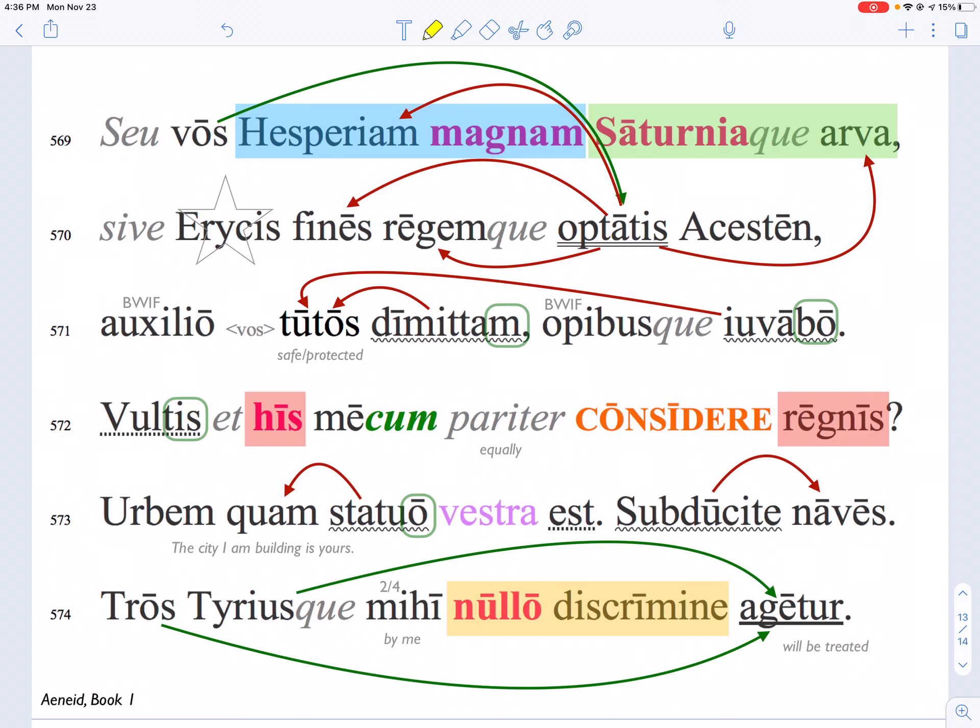And this is the end of her speech. So, whether you choose Great Italy and the Saturnian fields, or the borders of Eryx - this is a place in Sicily - and King Acestis, whether you want to go to Italy or back to Sicily,